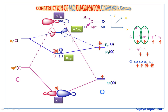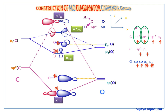The oxygen py orbital is unaffected because it cannot interact with the carbon orbital. The unbonded electrons in the sp oxygen orbitals give a new non-bonding orbital, represented as S. Similarly, the py orbital of oxygen is represented as P.